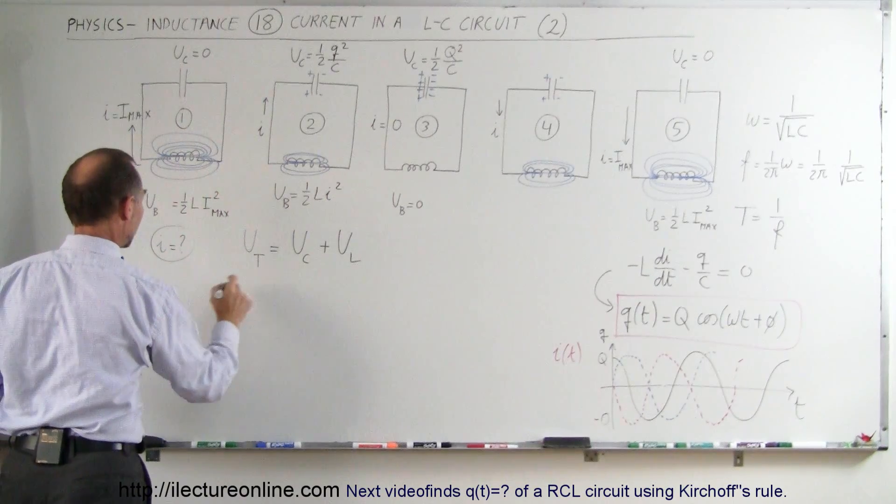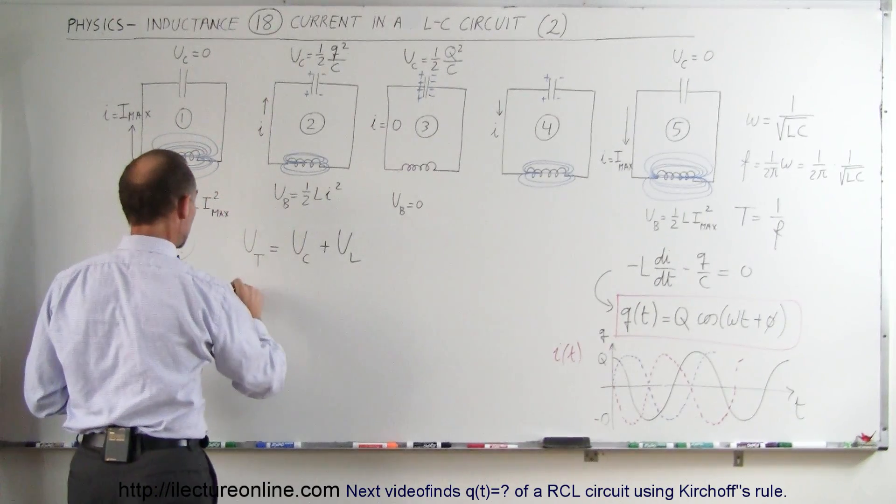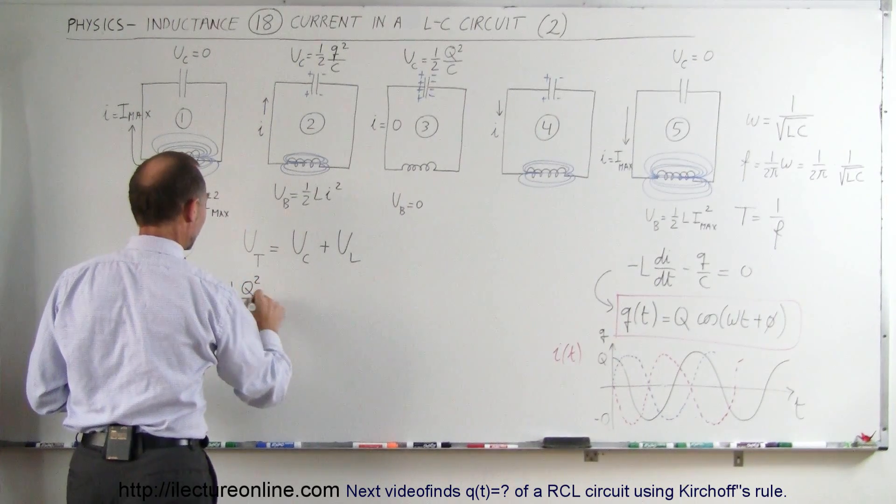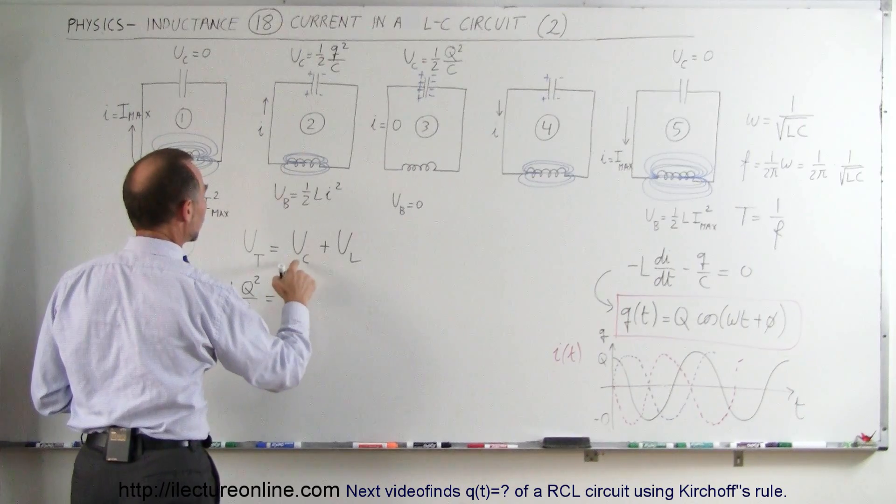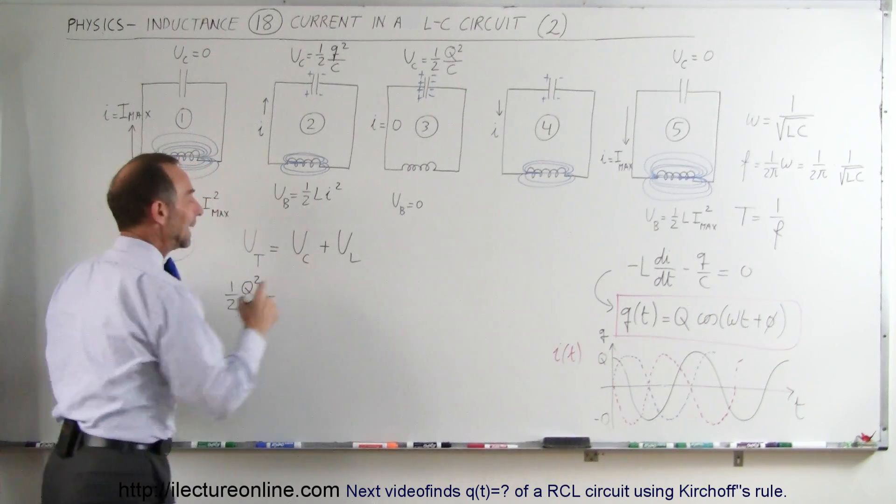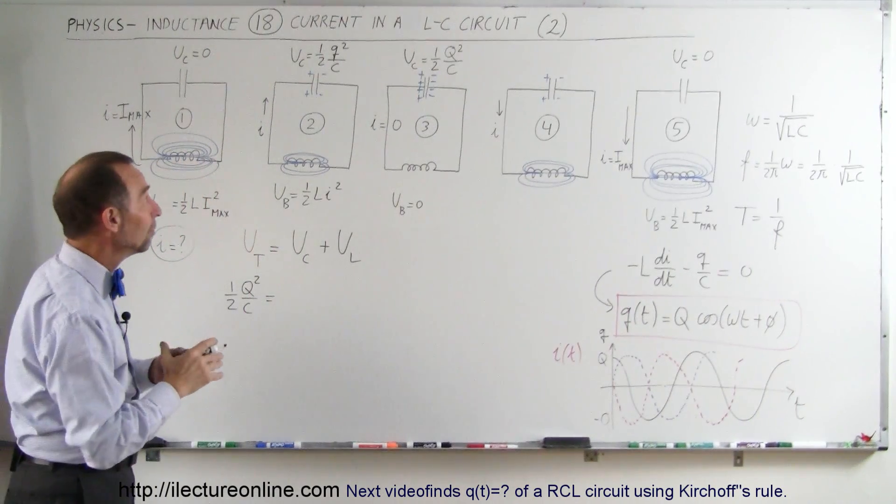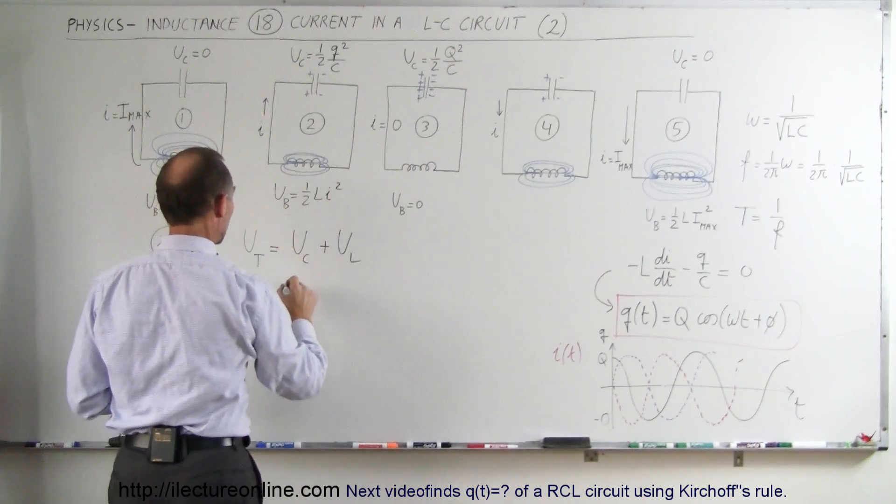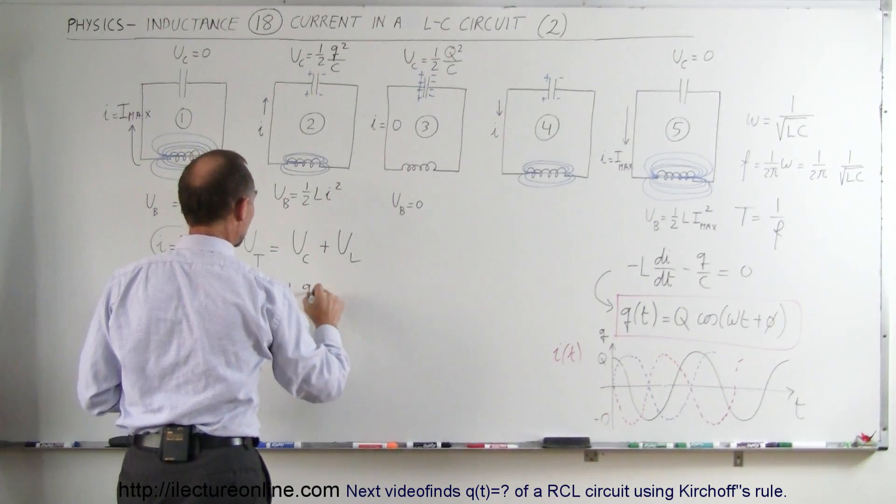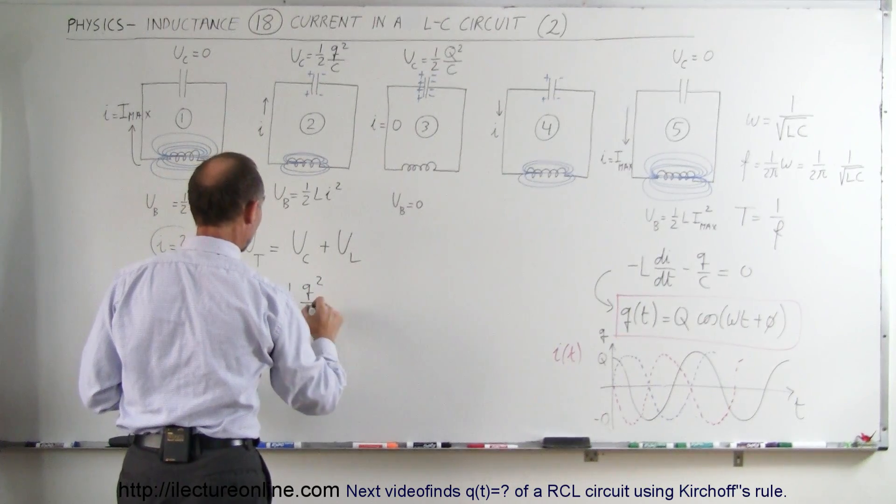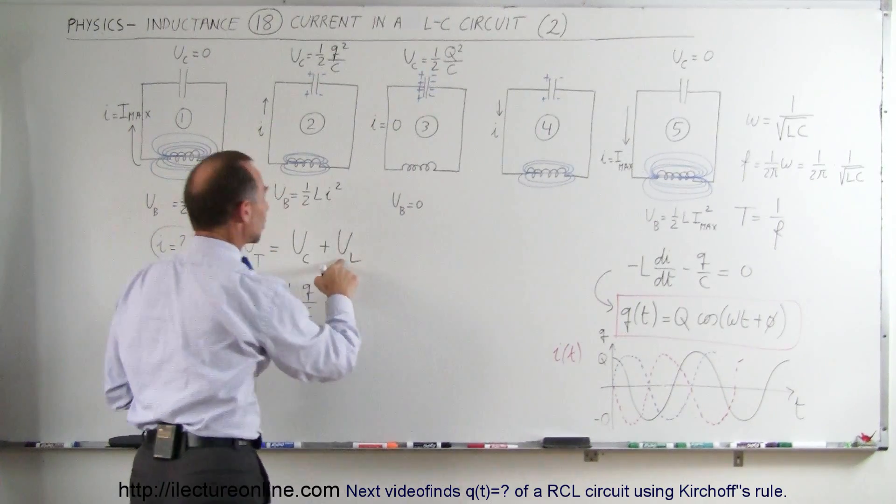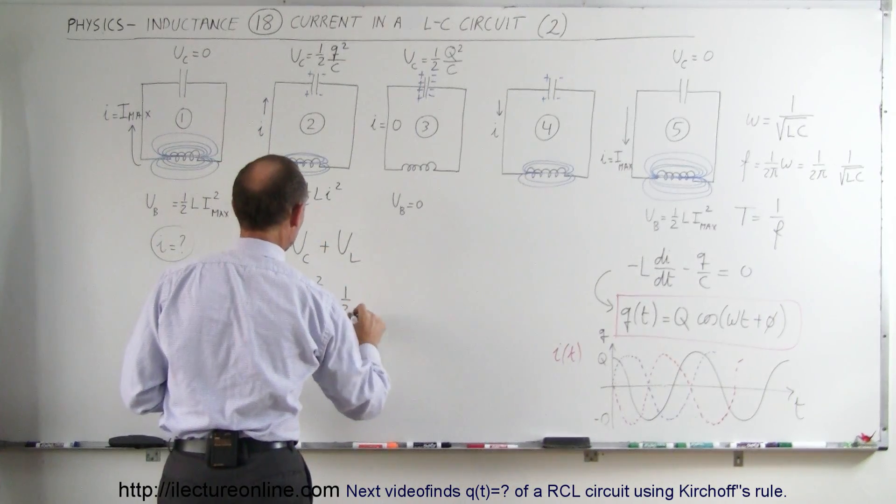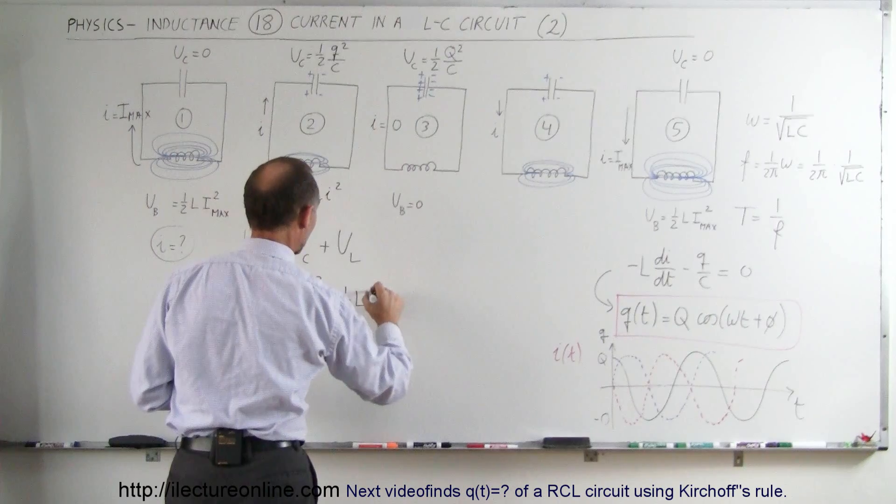So we can write this as the total kinetic energy would be one half times Q squared divided by the capacitance. And that will be equal to the energy stored in the capacitor at any point in time, which of course would depend upon how much charge we have on the capacitor. So that would be one half times the charge as a function of time squared divided by C, plus the energy stored in the inductor, which is equal to this at any point in time. So that would be one half times the inductance times the current squared.